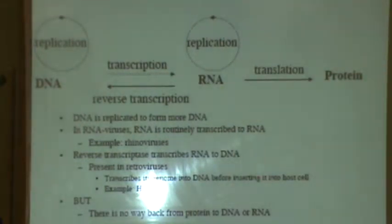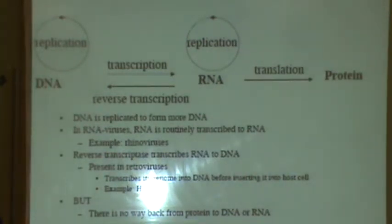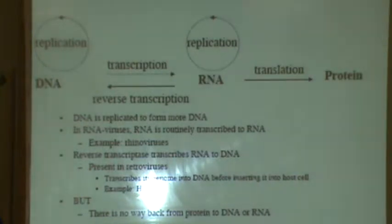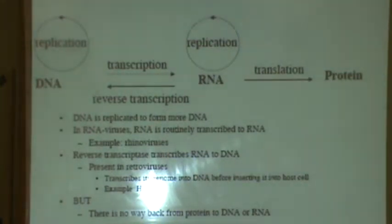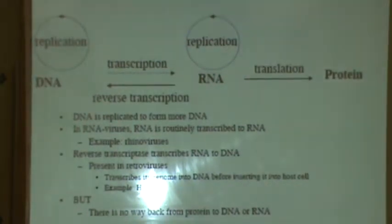There's no information flow from proteins to RNA. So even if the cell were made and came together — all the proteins and all the structures I showed you just happened to come together — there's no way the cell would be able to reproduce, because it couldn't get the information from a functional protein back into the DNA or into the RNA.